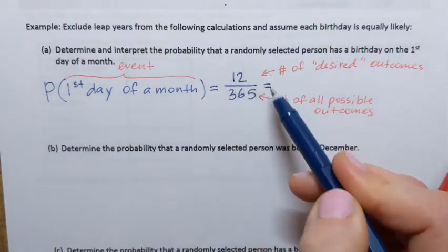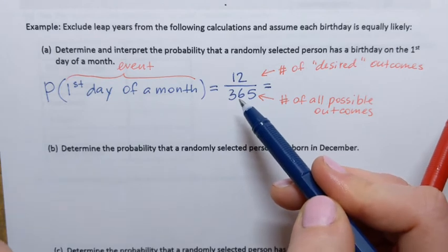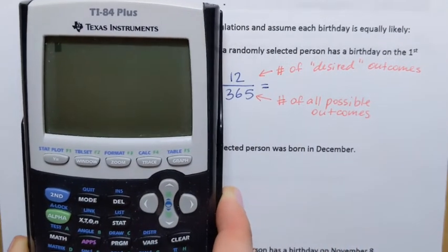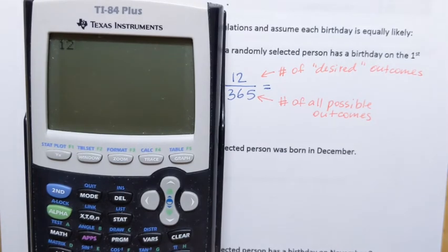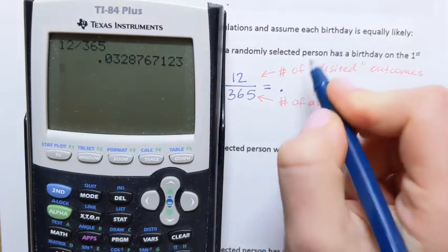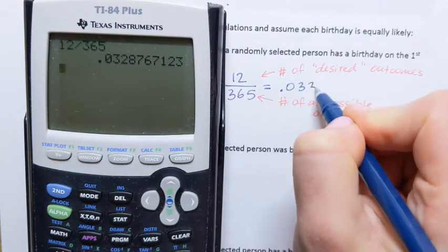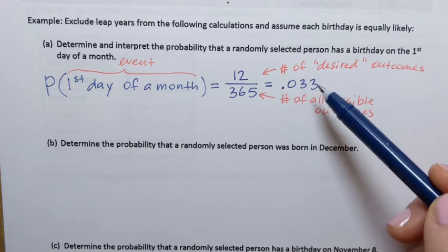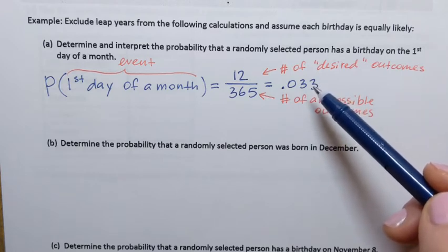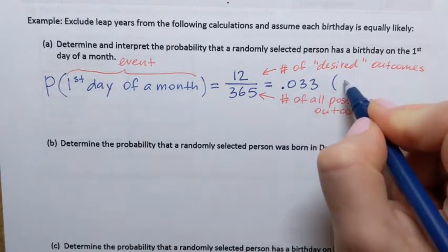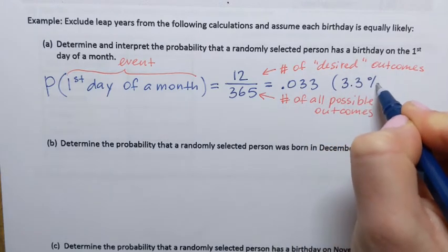That fraction gives us the probability. It's not very convenient to look at probability in fraction form, so we convert it to a decimal by dividing the numerator by the denominator: 12 divided by 365. Rounded to three decimal places, that's 0.033. Converting to a percentage by moving the decimal point two places to the right gives us a 3.3% chance.